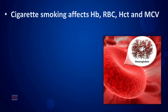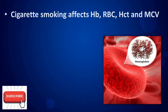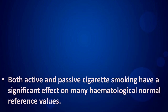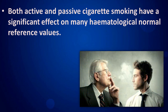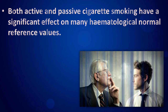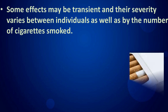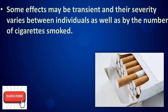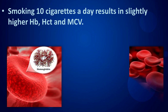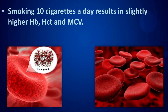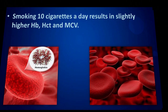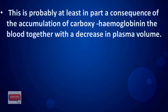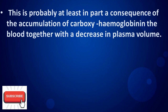Cigarette smoking affects hemoglobin, red blood cells, hematocrit, and mean cell volume. Both active and passive cigarette smoking have a significant effect on many hematological normal reference values. Some effects may be transient and their severity varies between individuals as well as by the number of cigarettes smoked. Smoking 10 cigarettes a day results in slightly higher hemoglobin, hematocrit, and mean cell volume.